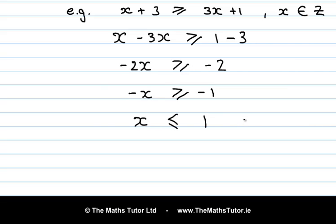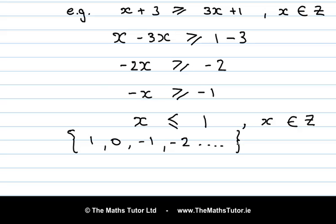So what are the actual elements of this solution set? x is an element of ℤ, and ℤ is the set of integers — positive and negative whole numbers. You can check this on page 23 of the formula and tables book. So x is less than or equal to 1. The first element we can think of is 1, which qualifies. Then 0, minus 1, minus 2 and so on — and that goes on forever. Each of these elements satisfies the inequality. Because x is an element of ℤ, we are able to include 0 and the negative numbers in this case.